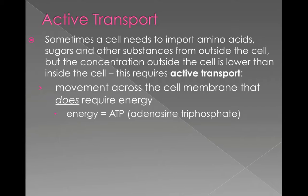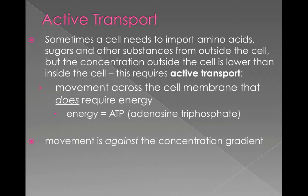Active transport is movement across the cell membrane that does require energy. The first scenario is movement against the gradient. Sometimes a cell needs to import substances like amino acids, sugars, and others from outside the cell, but the concentration outside is already lower than inside. So it's moving from low to high concentration, making the gradient even more extreme. This requires energy — the usable form of energy for a cell is ATP, or adenosine triphosphate.